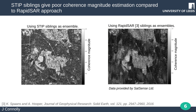Here we compare the coherence estimation using STIP siblings and RapidSAR siblings. Since neighbouring pixels contain similar siblings, this causes some smearing for the high coherence pixels in the STIP case. Additionally, pixels with few siblings that should have low coherence have wrongly high coherence estimates. This suggests that in the current form, the STIP siblings selected are not optimal for coherence estimation.